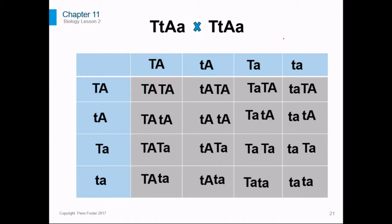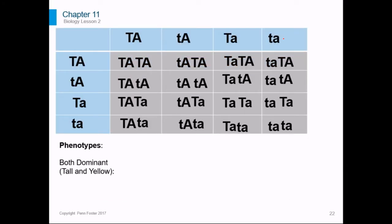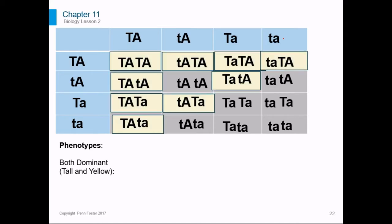The phenotypes for this are more complicated when looking at two traits, because now there are different combinations of height and color. Having both dominant traits — tall and yellow — is the most common, with nine of these example offspring having at least one tall gene and one yellow gene. Since these are the dominant traits, you only need one capital letter for color to get yellow, and only one capital letter for height to get tall. So there's a total of nine that have that combination.